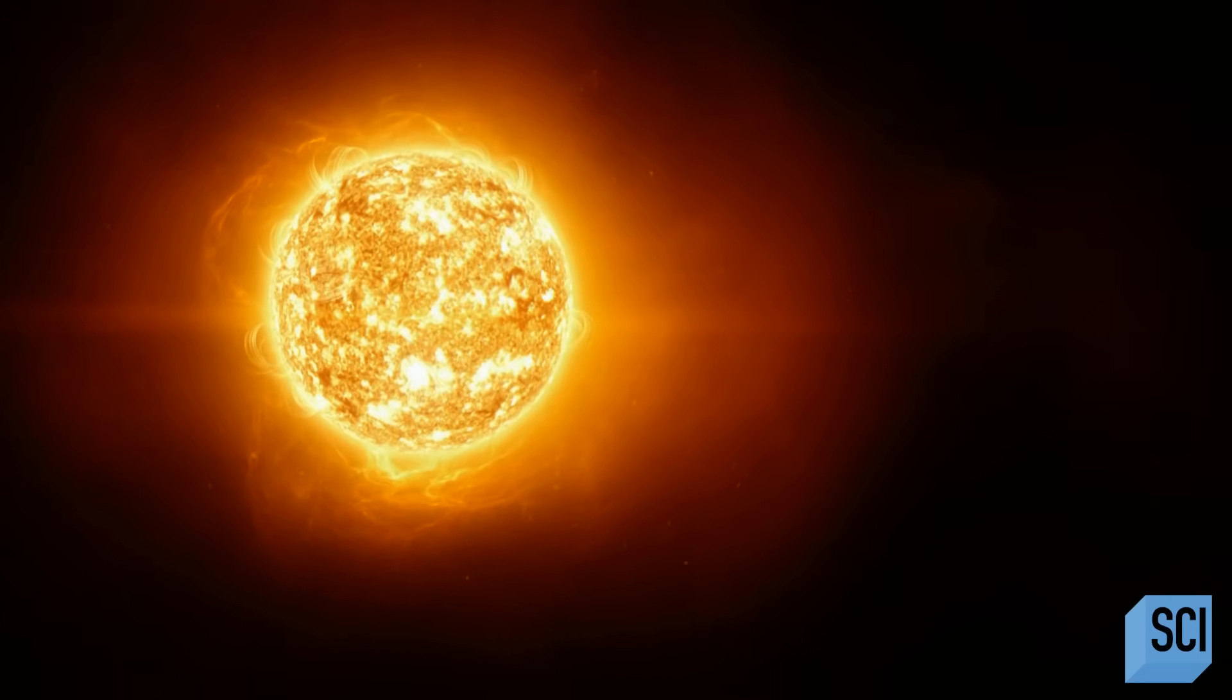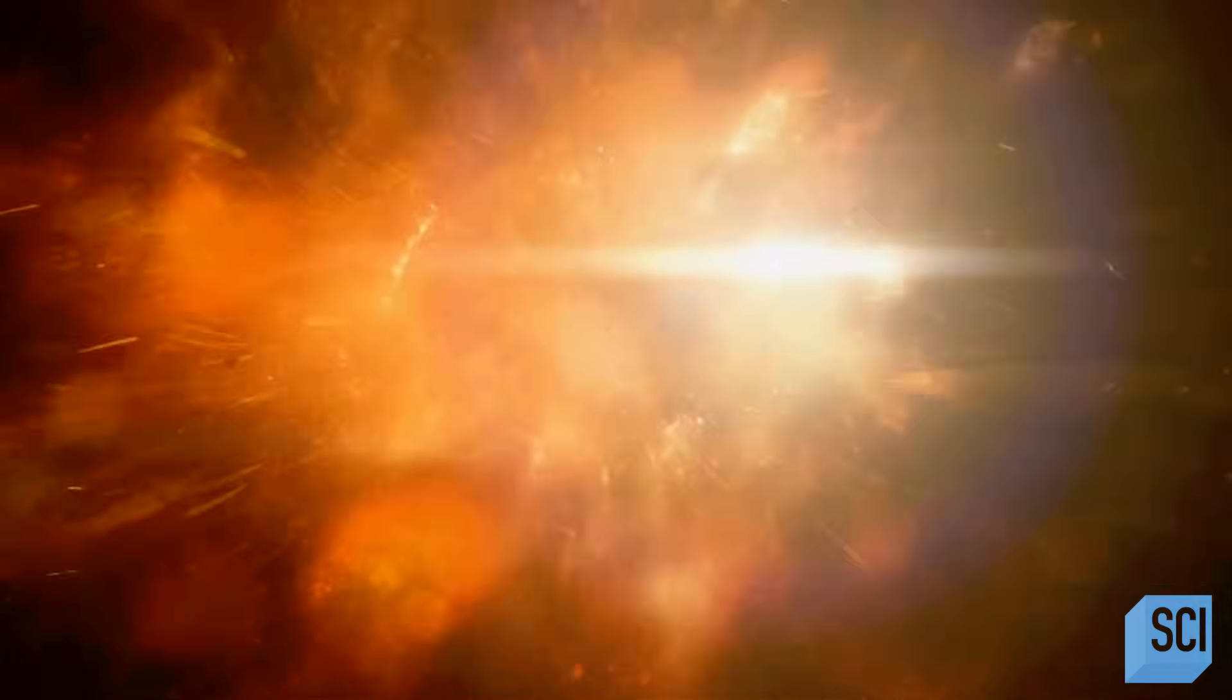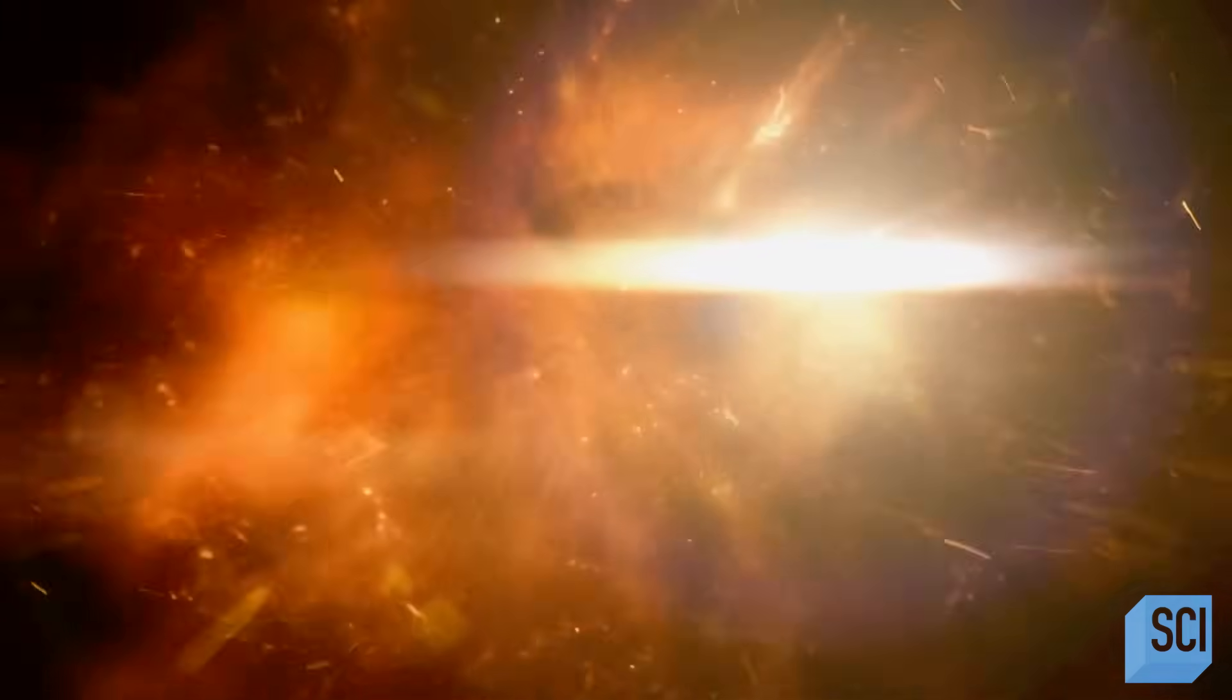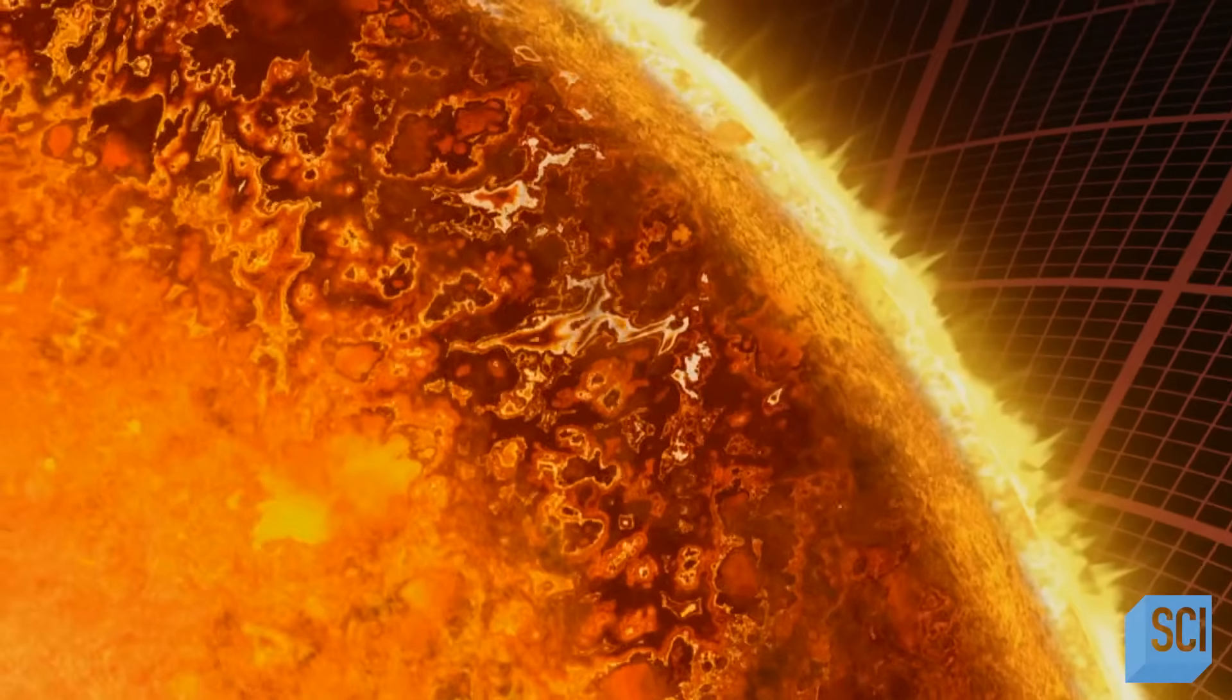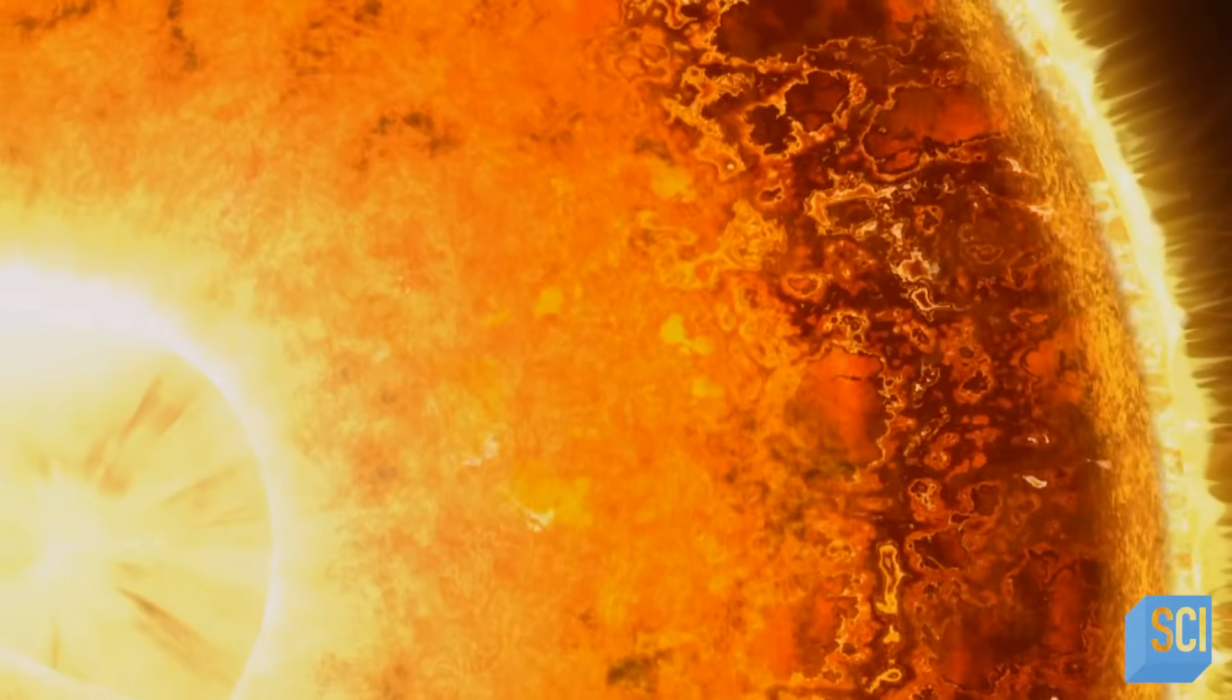But when stars like our sun near the end of their life, they run out of hydrogen fuel. The sun-like star makes more and more helium, which builds up in its center. Gradually, the immense weight of the star's outer layers crushes the helium core.